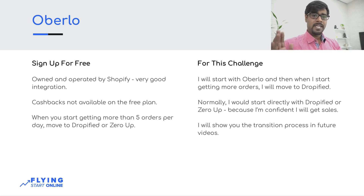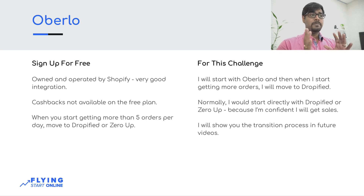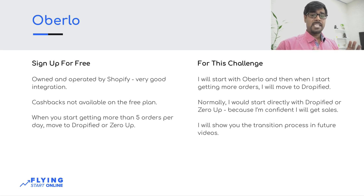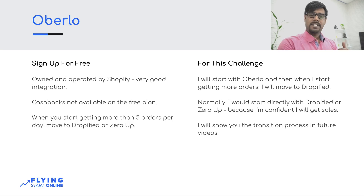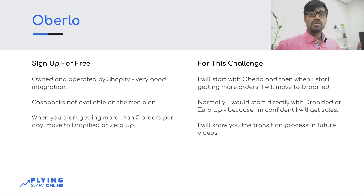Oberlo has a free sign-up with not a lot of complications. Shopify is owned by Oberlo so it's a good integration. One thing to note: when you place an order on AliExpress through Dropified or Zoro, you get cash back — but in Oberlo you don't get cash back. There is a platform where you can buy 5–10% of the money on AliExpress as cash back, but in Oberlo's free plan you don't get that. You only get it when you use Oberlo's paid plan, Dropified, or Zoro. But don't think about it yet — it will come when you actually have orders to send.